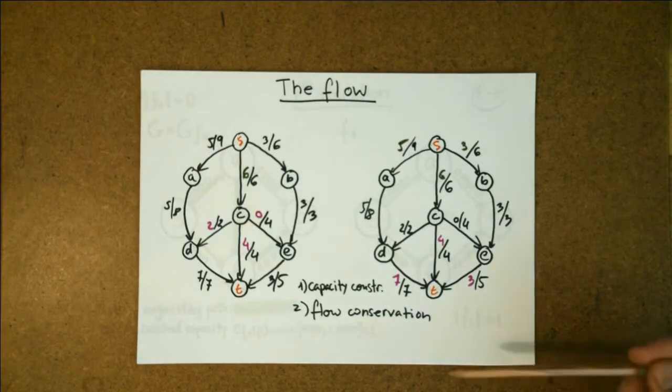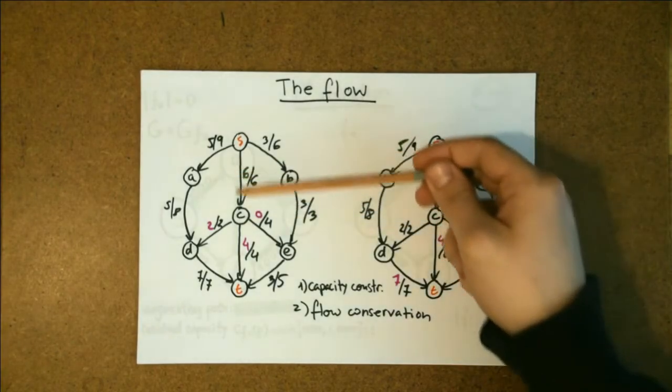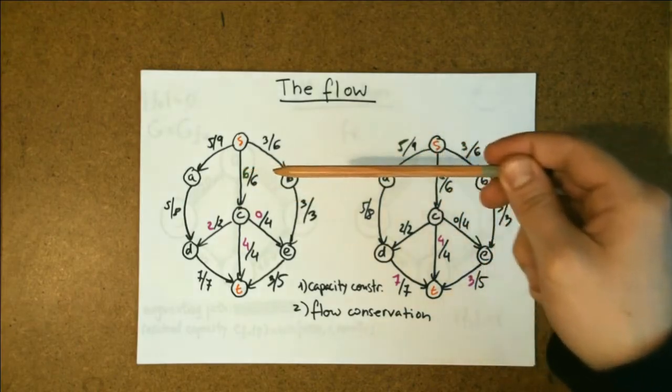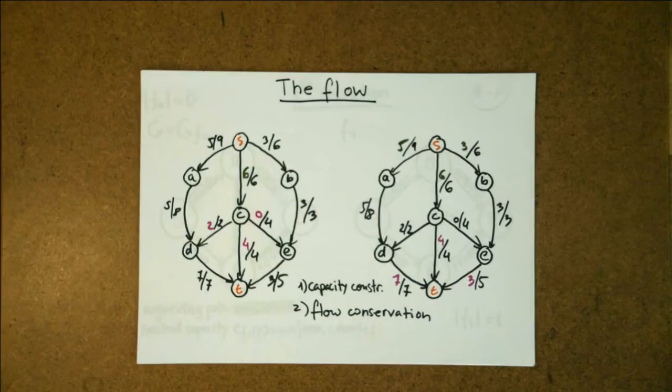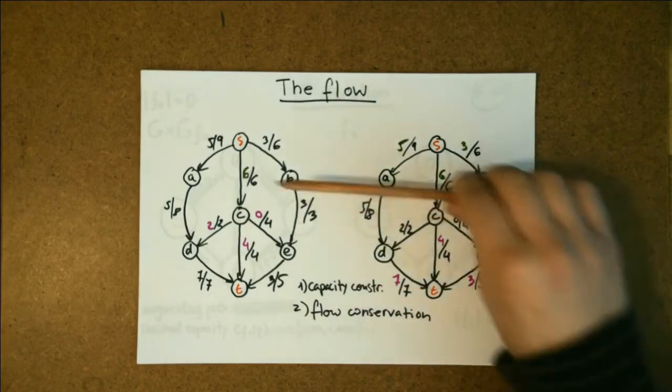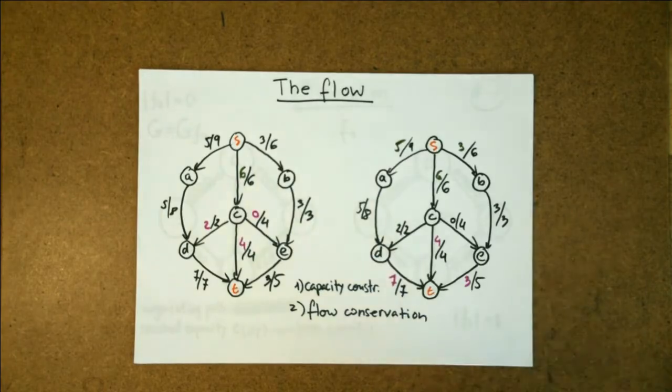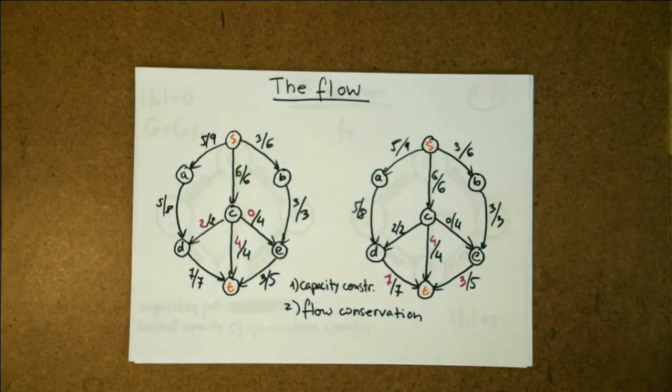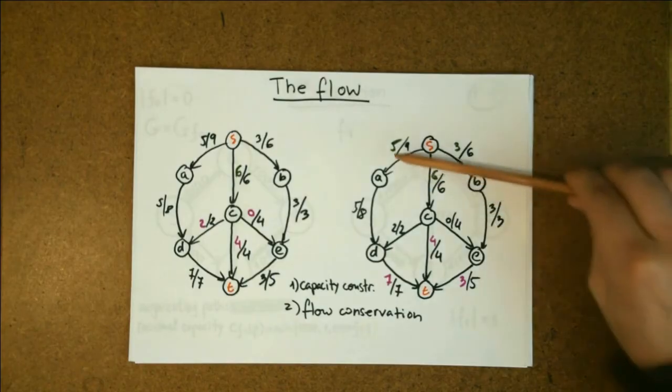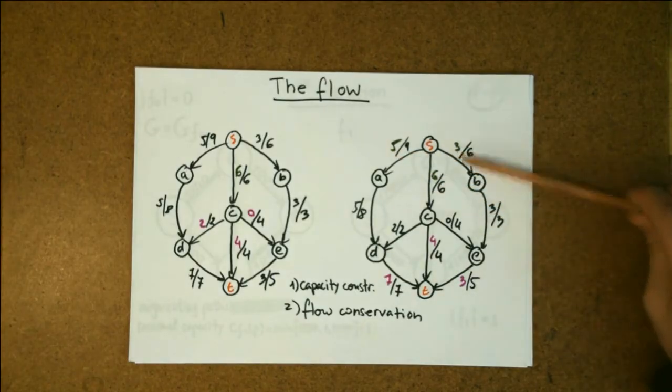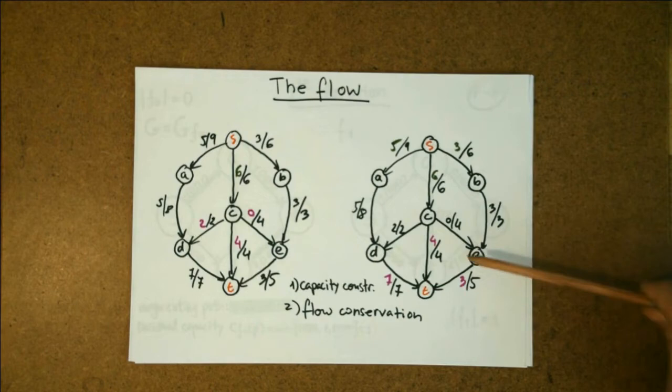Capacity constraint means that the amount of flow through an edge cannot exceed the capacity of that edge. Flow conservation means that the amount of flow entering the vertex must be equal to the amount of flow exiting that same vertex. Also the amount of flow that flows through the network must be equal to the amount exiting the source and the amount entering the sink.